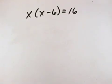In order to solve this quadratic equation, we need to put it in the form AX squared plus BX plus C equals 0.